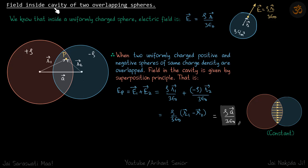Let us find field inside cavity of two overlapping spheres. We have two uniformly charged spheres of charge density rho and minus rho. These are solid spheres.